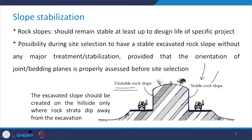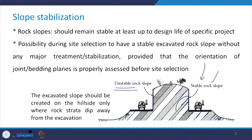Why is one side unstable? Because the rock strata is dipping towards the excavation. The excavated slope should be created on the hillside only where the rock strata dips away from the excavation — like in this case on this particular side, it is dipping away from the excavation, so it is stable. In the other case, it is the opposite situation, and that makes that rock slope unstable.